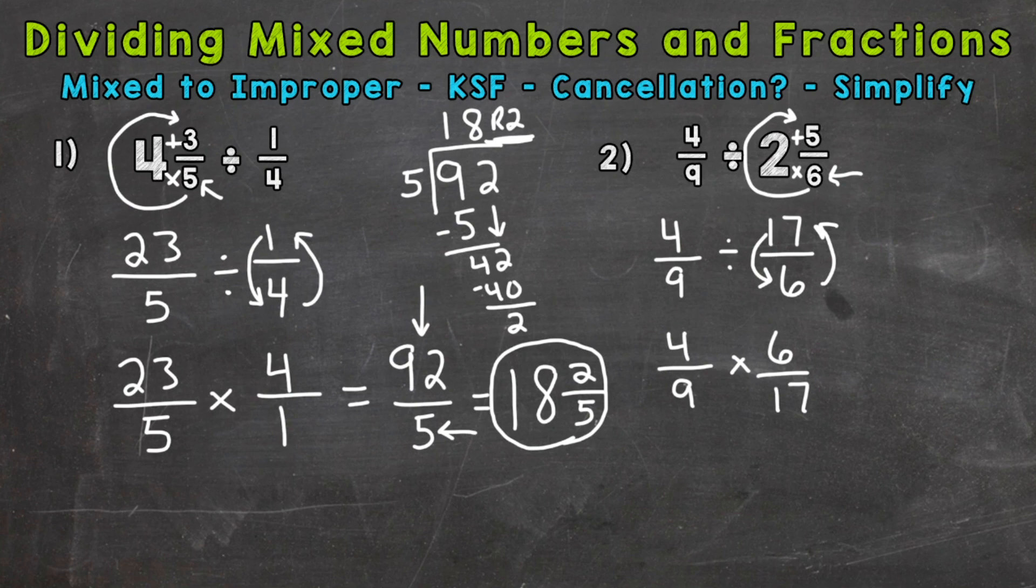Now we're ready to multiply straight across to get our final answer, but we can always check to see if we can use any cancellation here to simplify before multiplying straight across. Look for common factors between your numerators and denominators. In the case of number 2, we can use cancellation.